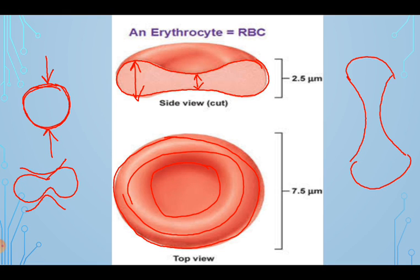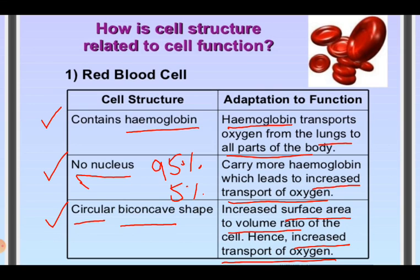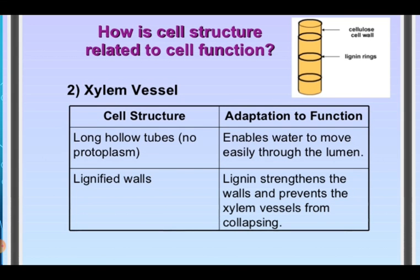So these are the special adaptive features of RBCs: number one, the presence of hemoglobin; number two, no nucleus; and number three, the circular biconcave shape. The next important example is xylem vessels. Xylem vessels are parts of the vascular bundle of plants. These vascular bundles are the conducting tissues present in plant cells. Xylem vessels are present in the roots, stems, and leaves of plants. Their function is to transport water and dissolved mineral salts from the roots to the main stem, branches, and leaves.